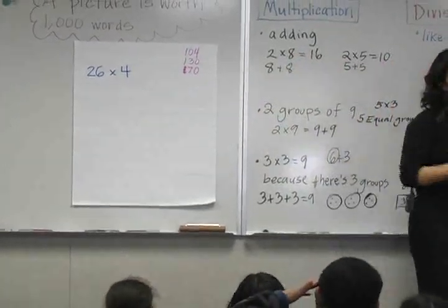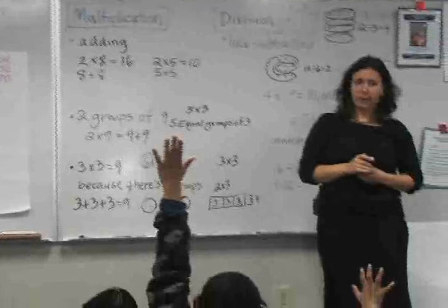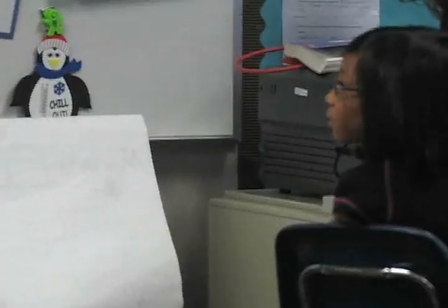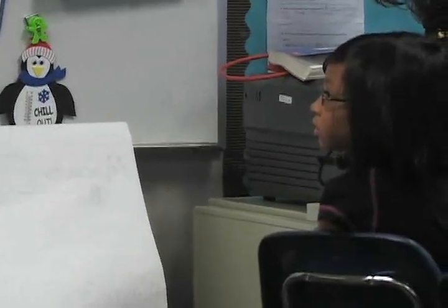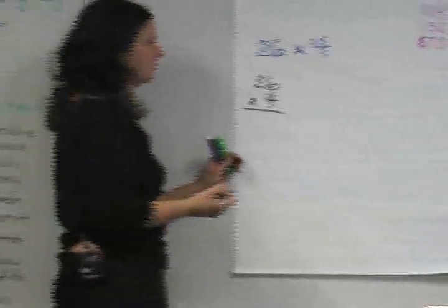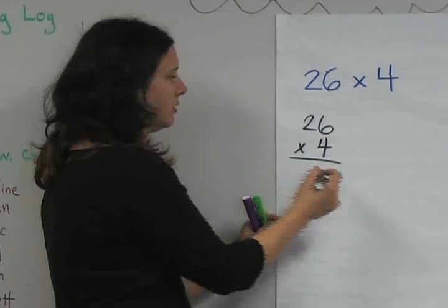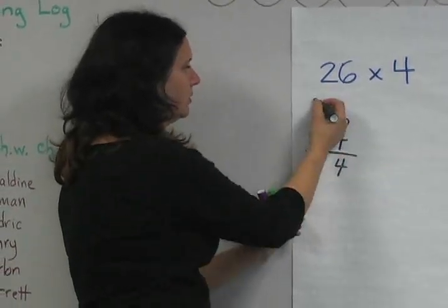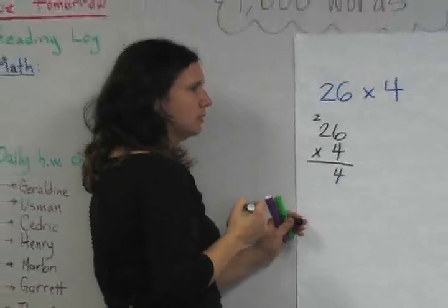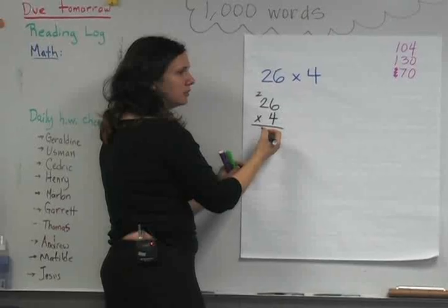Who wants to tell us what answer you want to explain and tell us how you did it — your strategy? Okay, why don't you start? And how did you get it? I put 26 on the top and 4 on the bottom. Then I times 6 times 4 equals 24. I put the 4 on the bottom of the 4 and the 2 on top of the 2. And 2 times 4 equals 8 and then plus 2 equals 3. And I just put the 3 on the top of the 4.